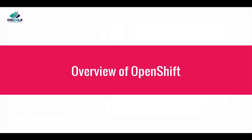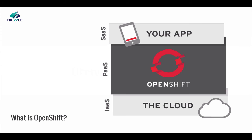OpenShift is a platform as a service, or PaaS, which allows you to serve your applications. OpenShift offers the ability to deploy your web application code using a library of predefined platform images that build your environment. OpenShift also allows you to build and obtain Docker images and use them to swiftly deploy your applications on top of them.